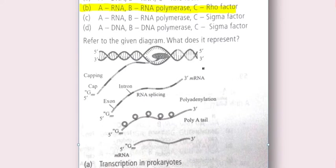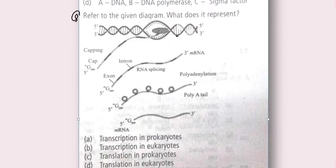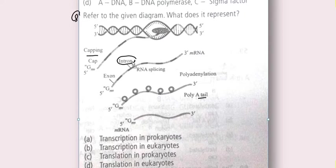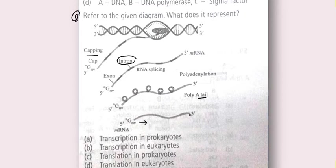The second question: refer to the given diagram — what does it represent? You can see that it represents the processing of hnRNA, where capping, tailing, and splicing occur. The introns are removed, and in the last diagram you can see the processed mRNA.